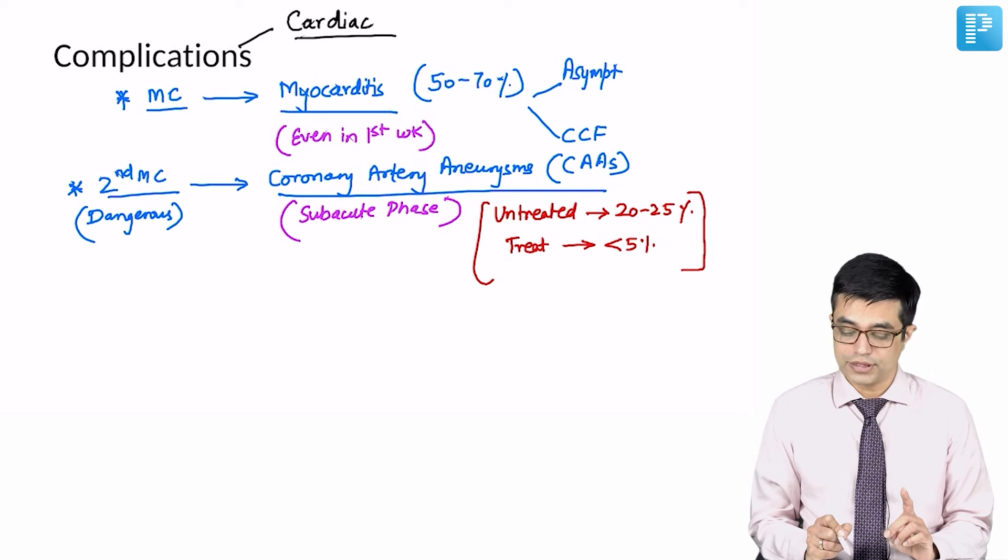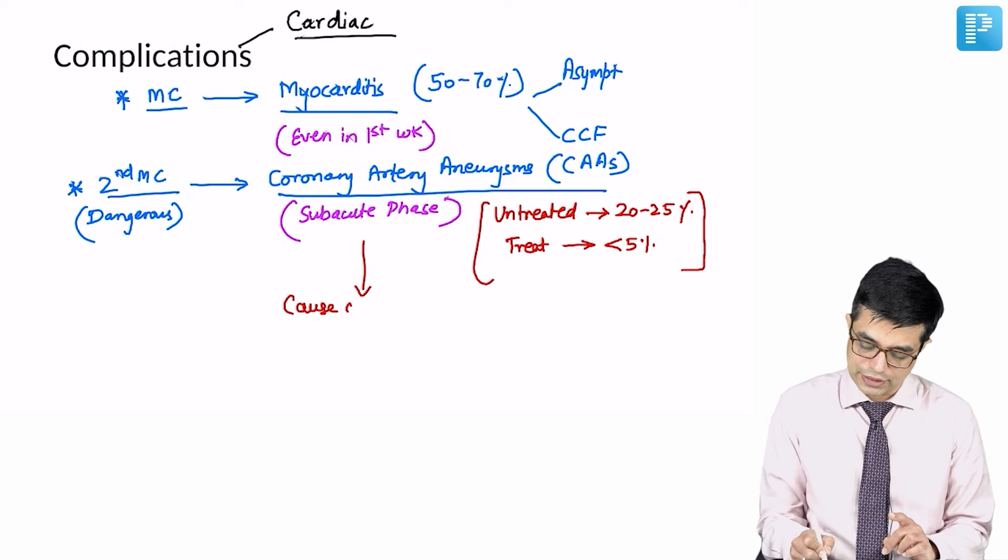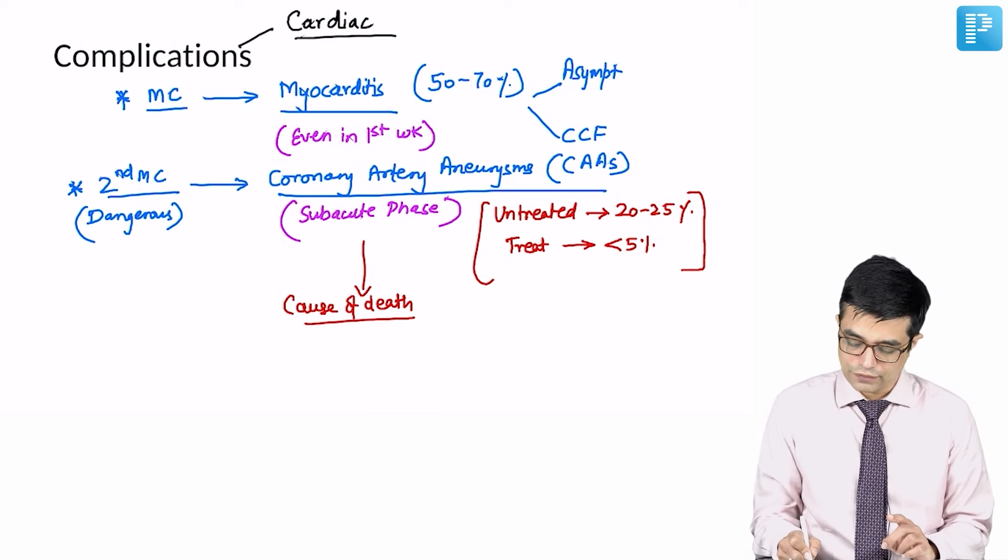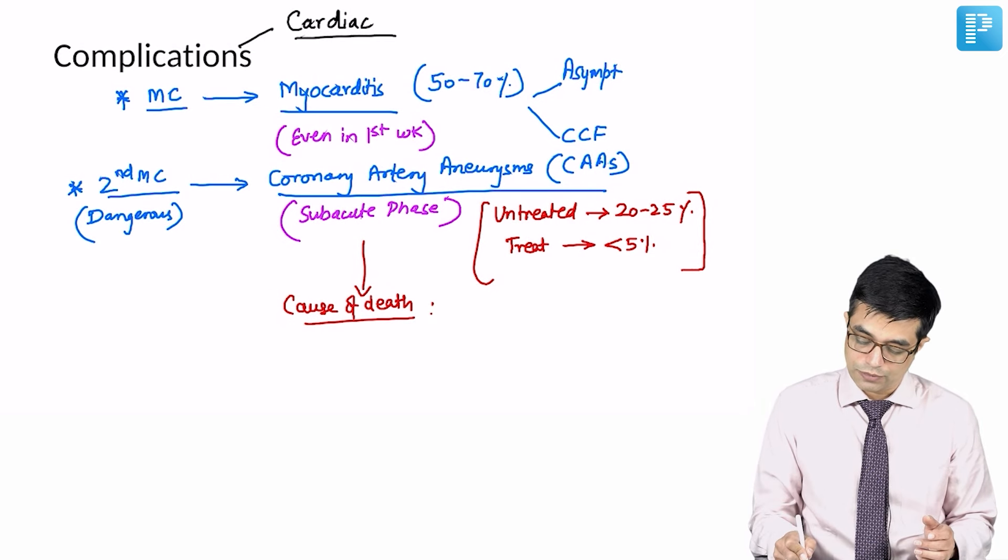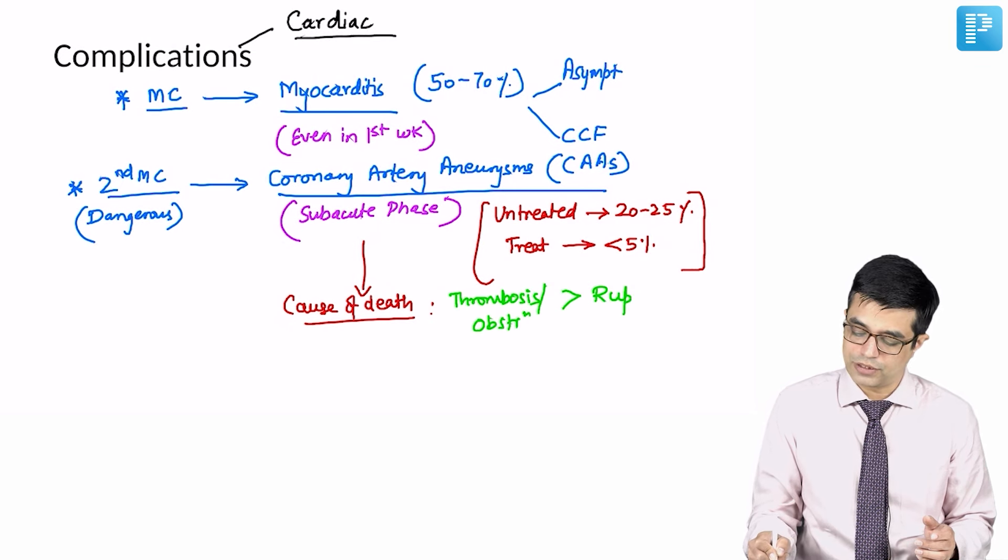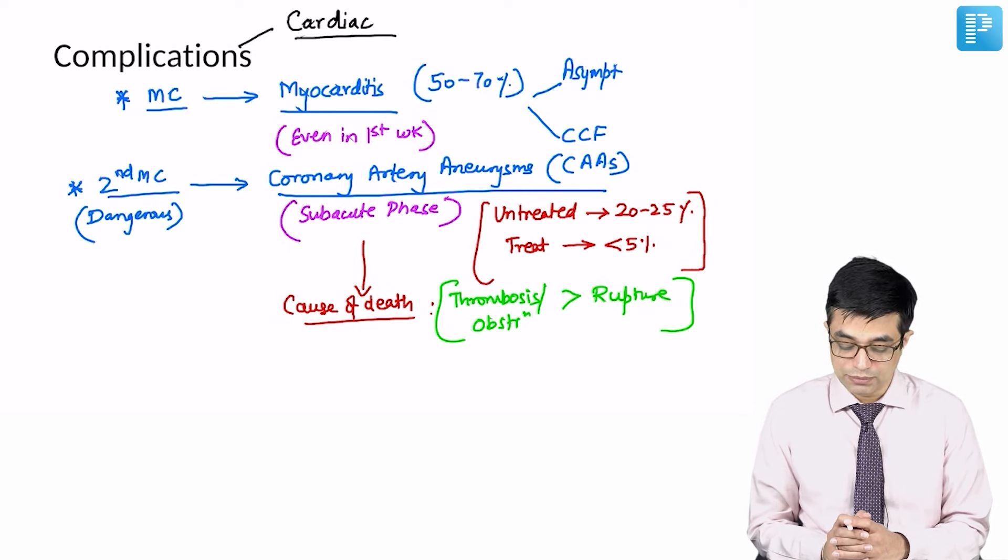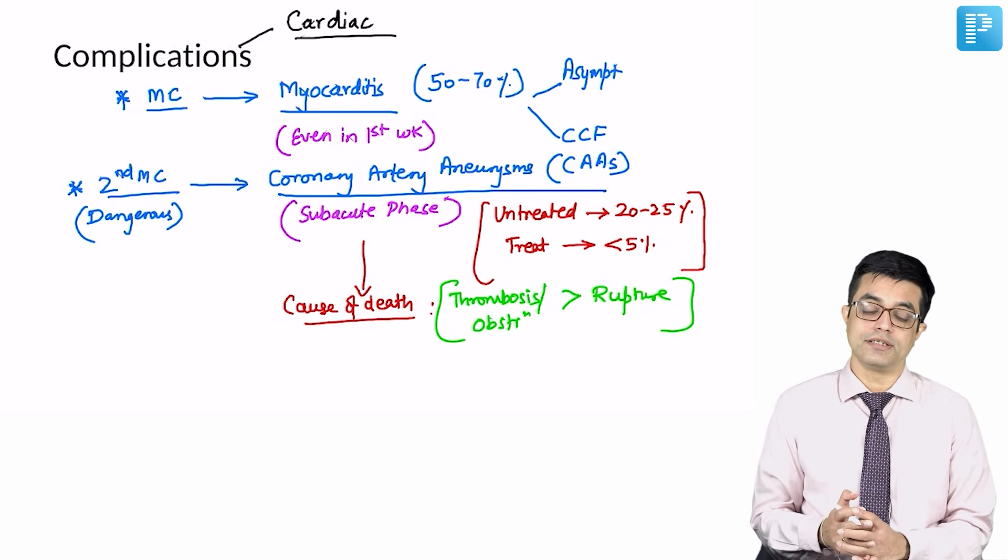So treating the disease reduces the risk of coronary artery aneurysms. Coronary artery aneurysms are considered to be the cause of death in Kawasaki disease. And the cause of death in aneurysm is obstruction or thrombosis. Rarely rupture of the aneurysm can also lead to death, but it is thrombosis or obstruction producing myocardial infarction in a child which is the most common cause of death in Kawasaki disease.